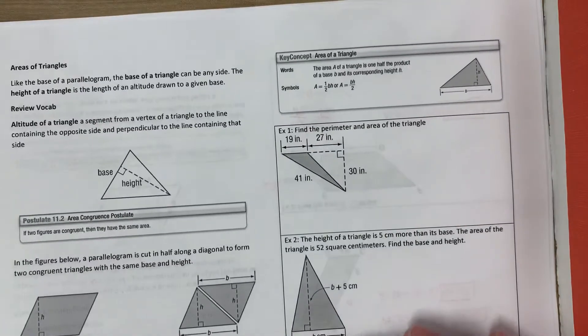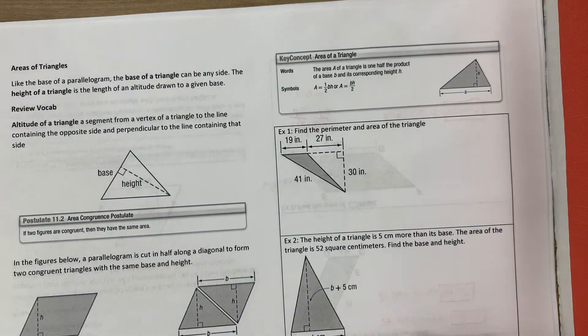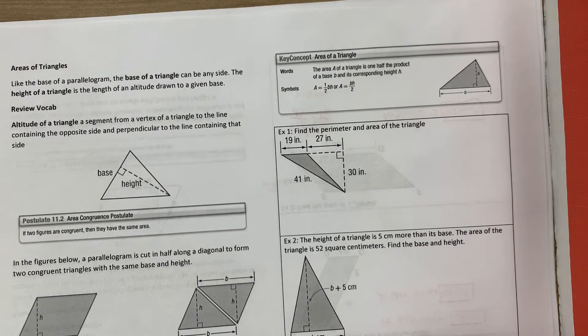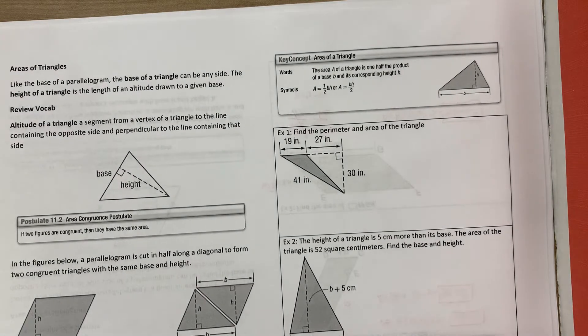All right. Areas of triangles. Like the base of a parallelogram, the base of a triangle can be any side. The height of a triangle is the length of an altitude drawn to the given base. The altitude of a triangle is a segment from a vertex of a triangle to the line containing the opposite side and perpendicular to the line containing that side.